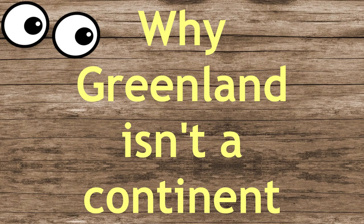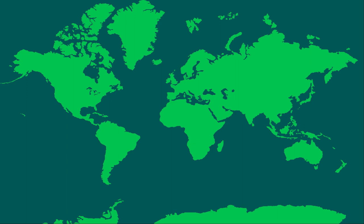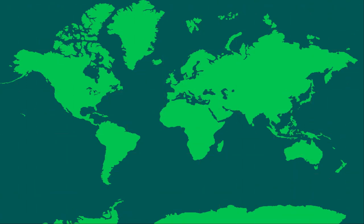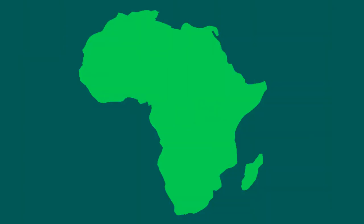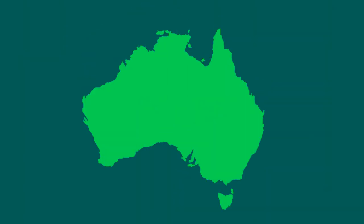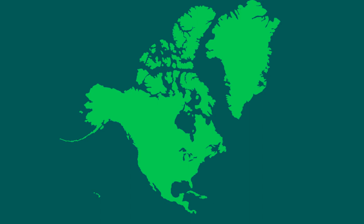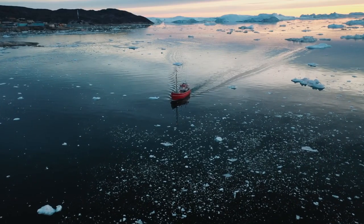A while ago, I was looking at a map that looked something like this. It's called a Mercator projection, and as my eyes were scanning through the map, I stumbled upon this plot of land so big it was similar to the size of Africa or South America, and even bigger than Australia — a continent in itself. Yet this plot of land is part of North America, and is an island called Greenland.